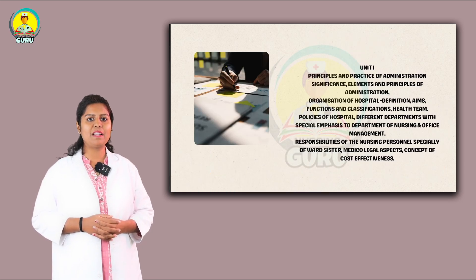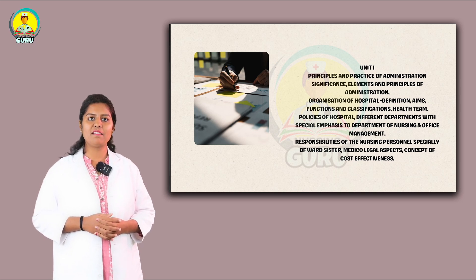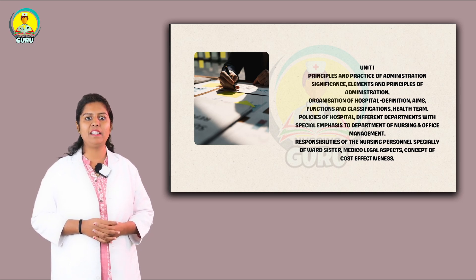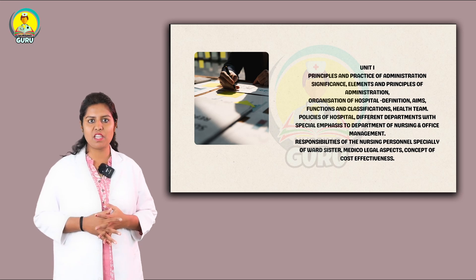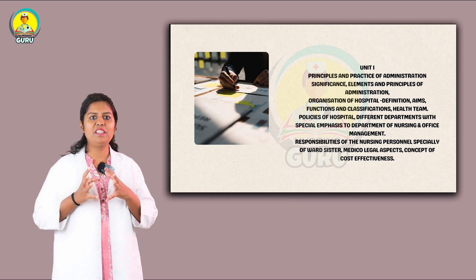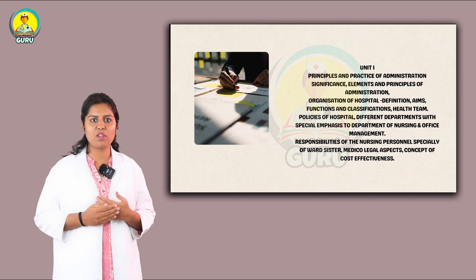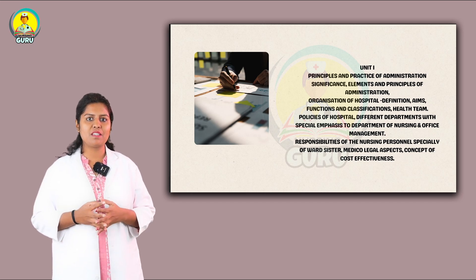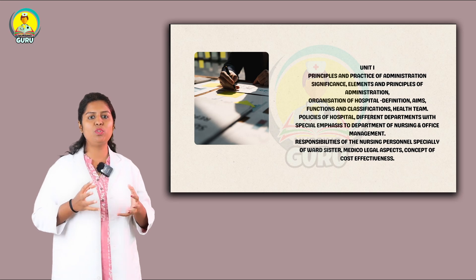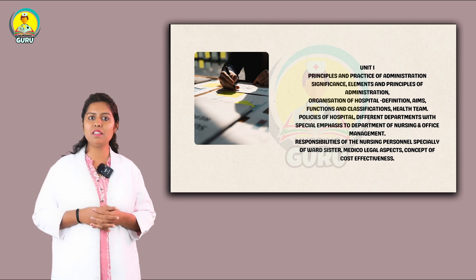Unit 1 is Principles and Practice of Administration. Under this we have significance, elements, and principles of administration. Then organization of hospital — definition, aims, functions, and classifications. The hospital definition, aims, and functions and classification is a very important question. Then health team, policies of hospital, different departments with special emphasis on the department of nursing and office management — how to manage the office. These all come under this unit.